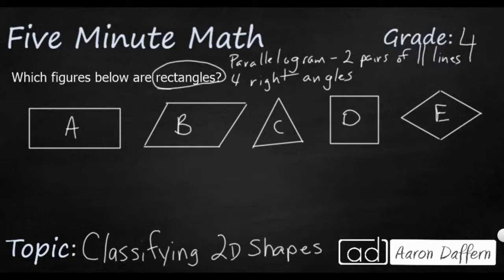Most of us recognize figure A as a rectangle. It's got four square corners. Let's put these right here. One, two, three, four. And it's got two pairs of parallel lines. We've got the top and the bottom. We've got the side and the side. So this, definitely a rectangle.